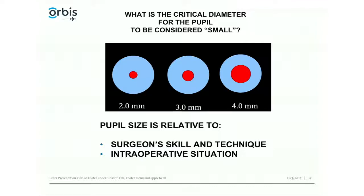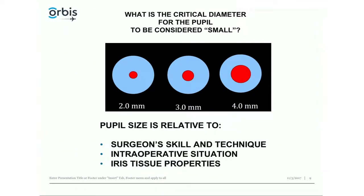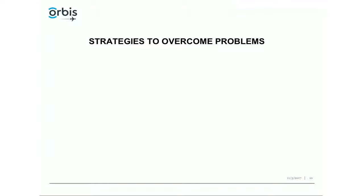At the beginning, before starting the rhexis, the easiest option for a beginner is to use hooks to open up the pupil. However, hooks can damage or disfigure the iris — especially in floppy iris where the tissue is not normal and tends to prolapse into the side ports or the main opening. The iris tissue properties determine management: floppy iris requires a different approach than a fibrotic, rigid pupil.